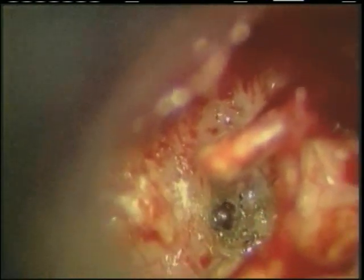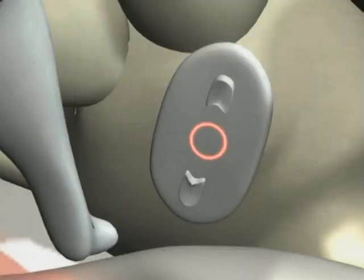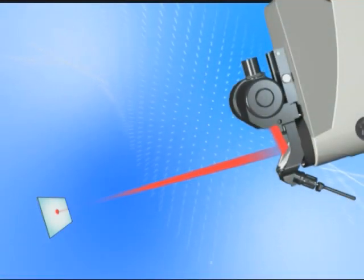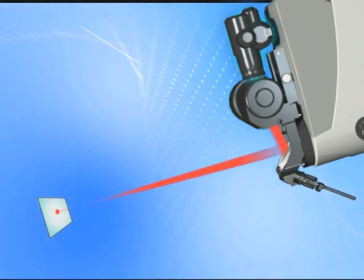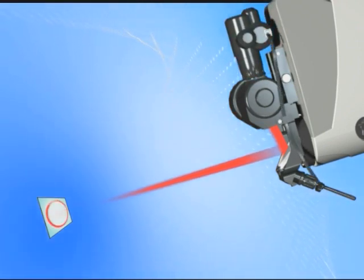The rosette pattern forms the larger fenestra in the stapes footplate. An elegant advancement of this laser procedure is known as the one-shot stapedotomy. In this case, a robotic scanner which automatically moves the laser beam is added to the micro manipulator.